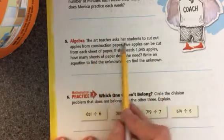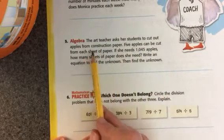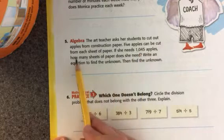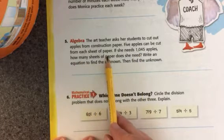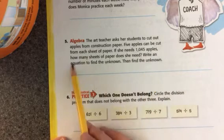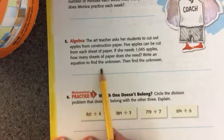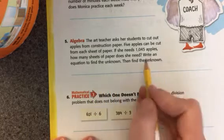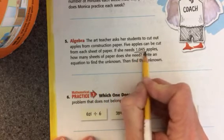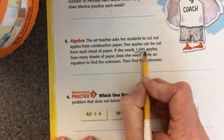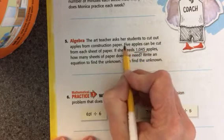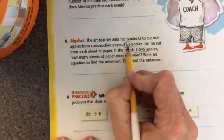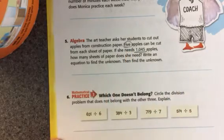Number 5. The art teacher asks her students to cut out apples from construction paper. 5 apples can be cut from each sheet of paper. If she needs 1,045 apples, how many sheets of paper does she need? Write an equation to find the unknown. Okay. Here's our number, 1,045. That's going to be our dividend. And here's our number. It will be our divisor. So you'll go ahead and work that problem out.